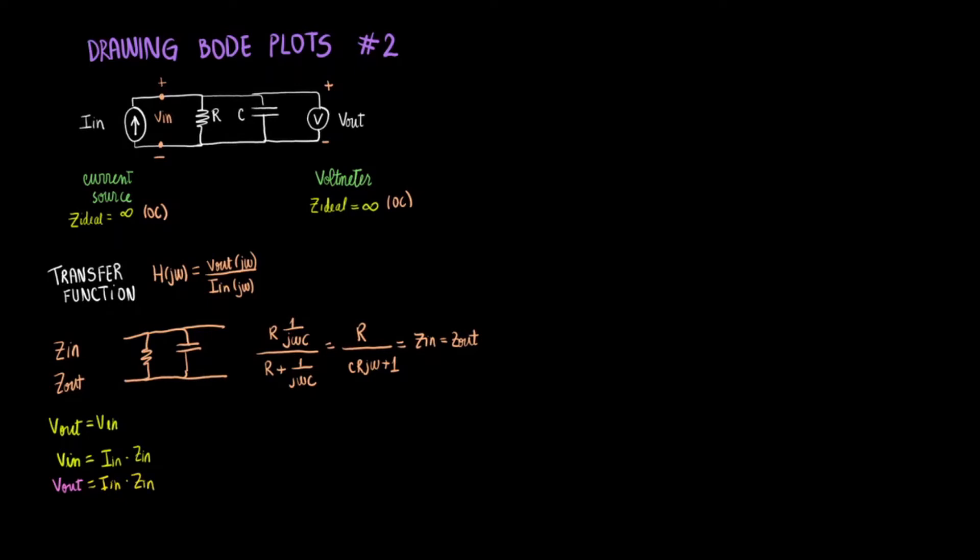So notice that you can rearrange this expression to get us the expression for the transfer function. We would have V out over I in both j omega equals to the Z in. Now you can remember that Z in equaled the Z out. And those will now be the transfer function.